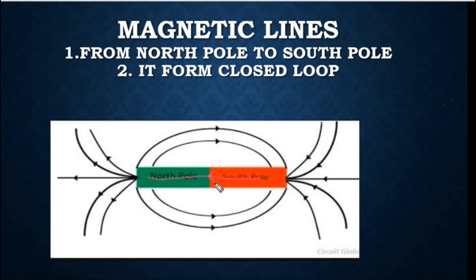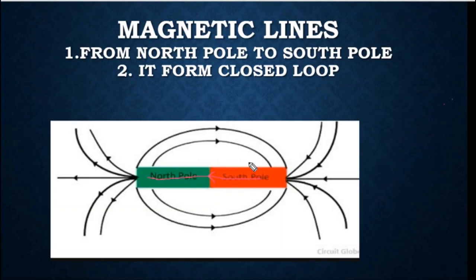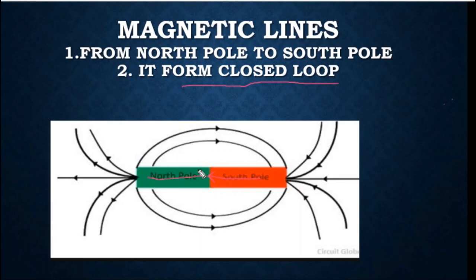Magnetic lines are basically imaginary lines that show the direction of a magnetic field. If there is a magnetic field, these imaginary lines indicate attraction and repulsion between poles. Outside the magnet, the direction is north to south, but inside the magnet the direction is south to north. This means that the magnetic lines form a closed loop. The magnetic field lines exit from the north, go outside to the south, and return inside from south to north — forming a complete closed loop.